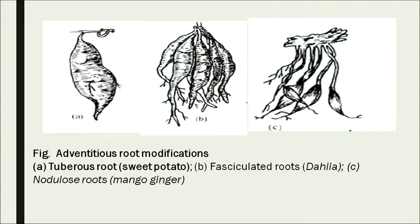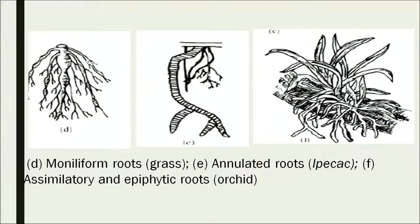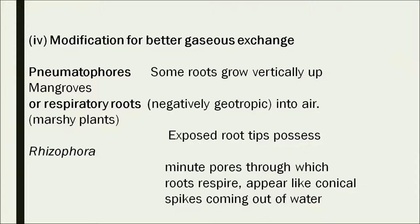These are pictures of tuberous roots and nodulose roots. Moving ahead, figure D shows moniliform root, and annulated root is shown in Ipecac. Assimilatory or epiphytic roots are found in some orchids. Pneumatophores in mangrove plants perform the function of respiration — Rhizophora is the plant example for such roots.